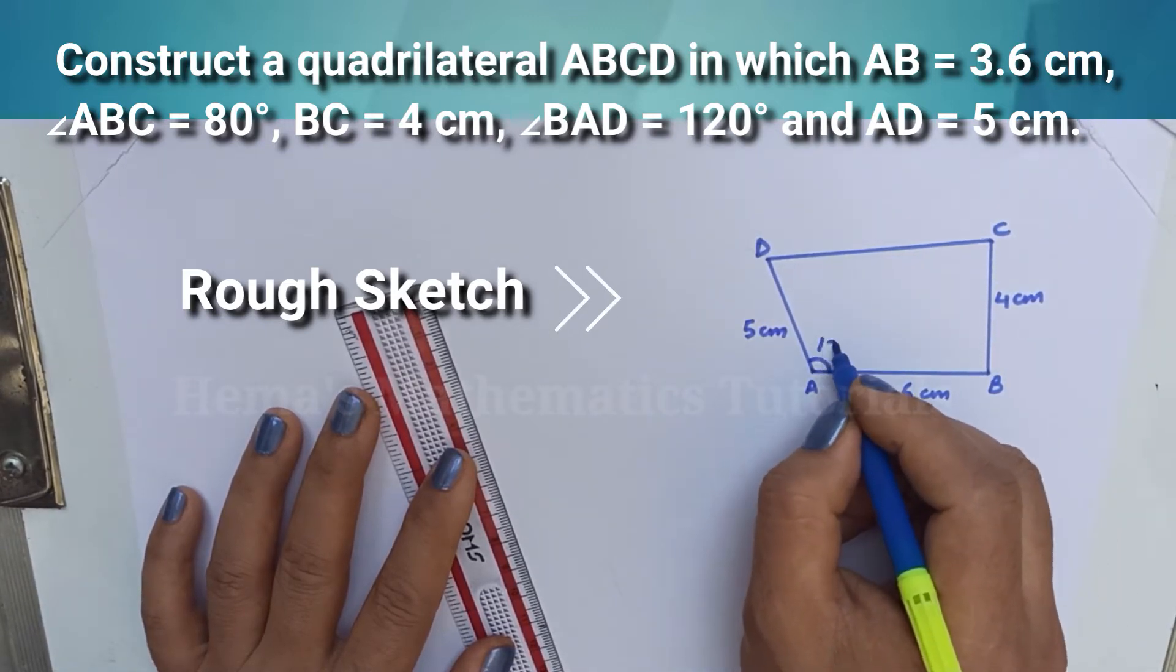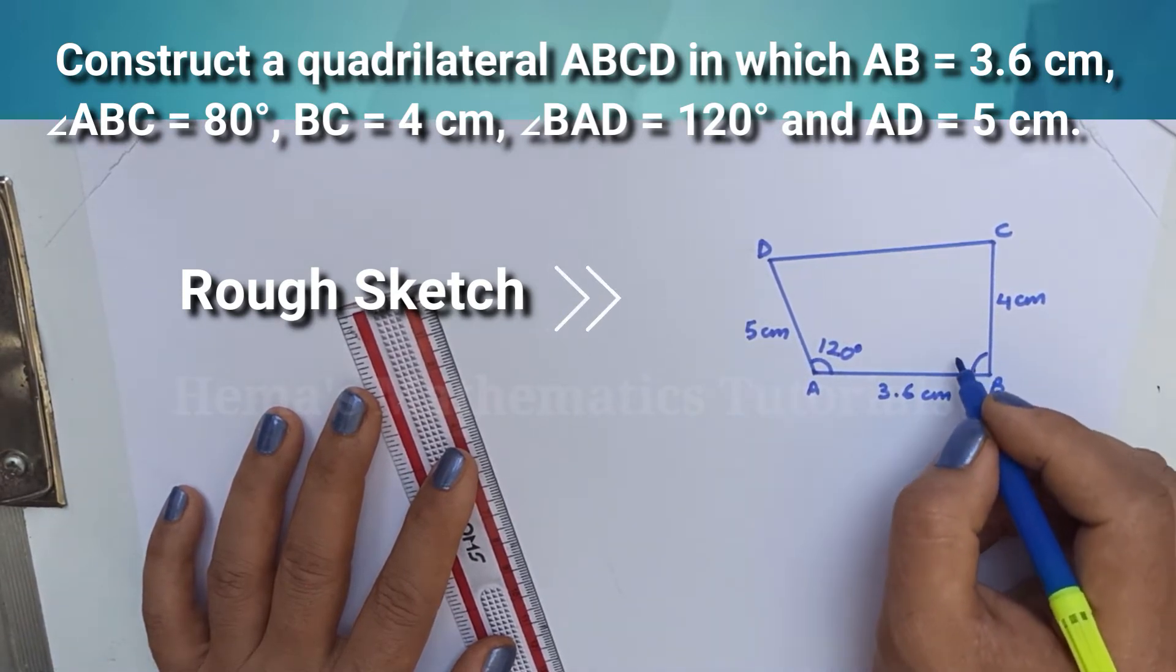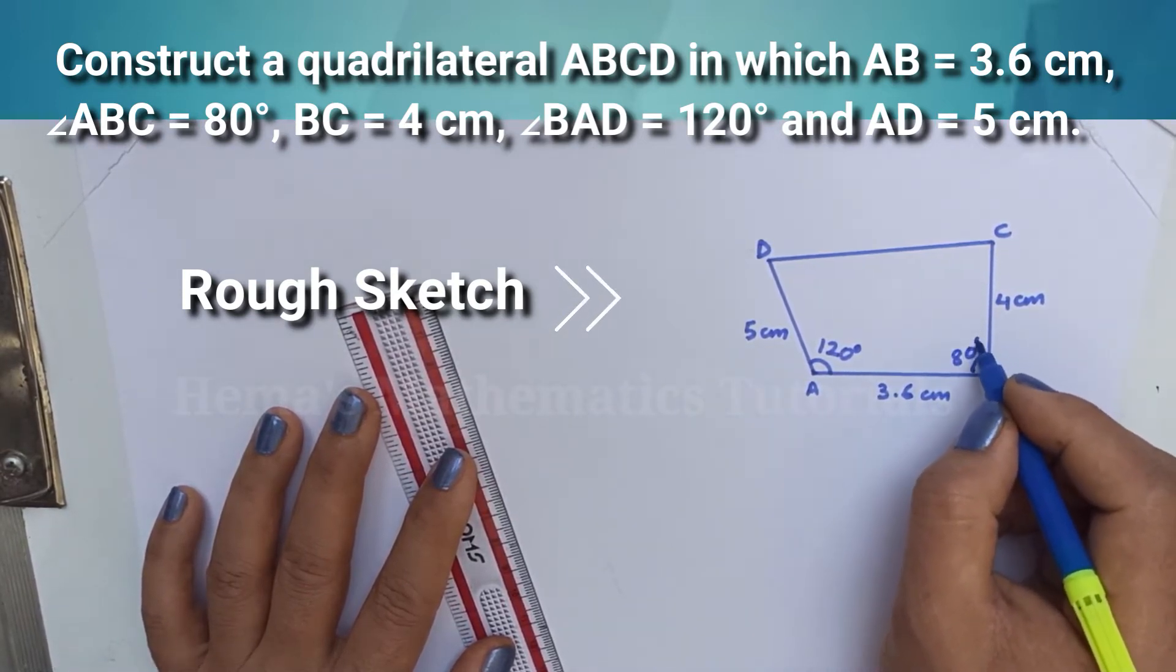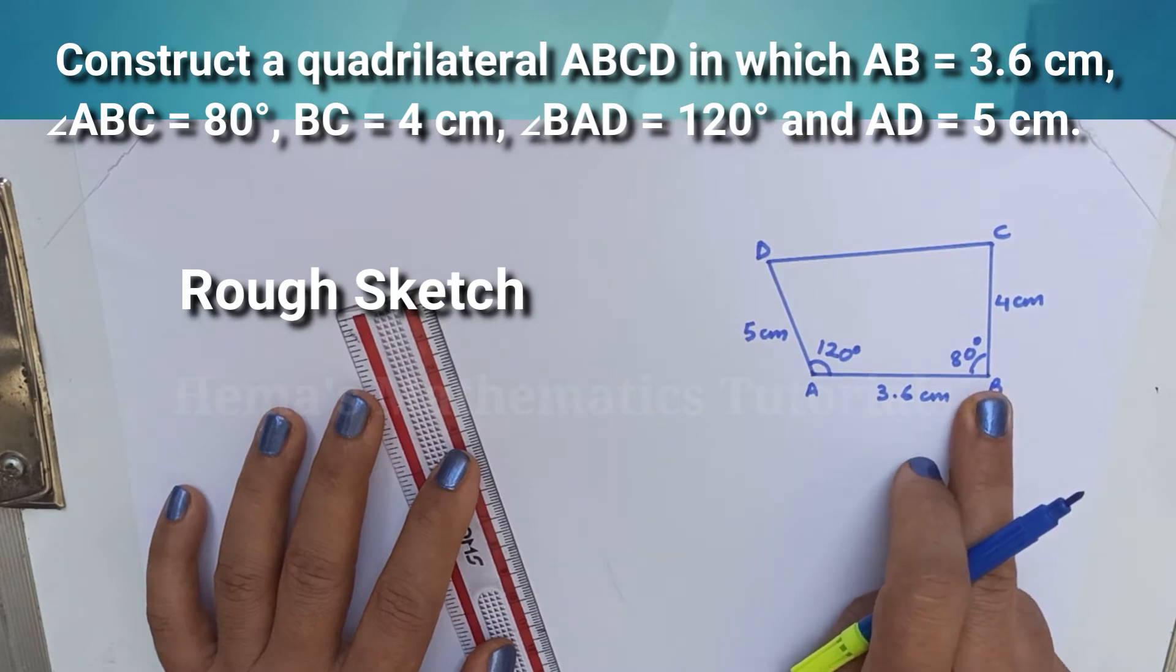Angle A is equal to 120 degrees. Angle B is equal to 80 degrees. Always remember to draw a rough figure. This will help you in the construction of the figure.